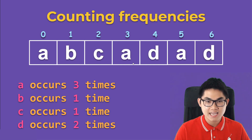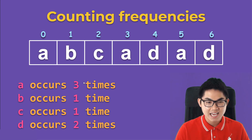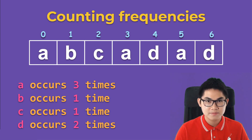Let's do another example. If we have the list [a, b, c, a, d, a], you can see that the letter 'a' occurred three times, the letter 'b' occurred one time, 'c' also occurred one time, and the letter 'd' occurred two times. The maximum frequency is three, and since three only occurred one time, the output will be three.